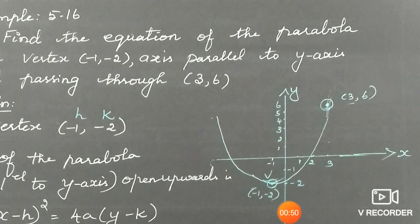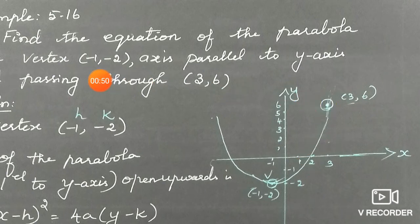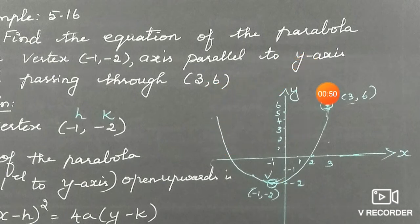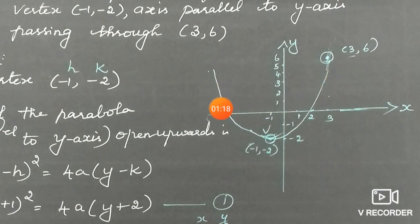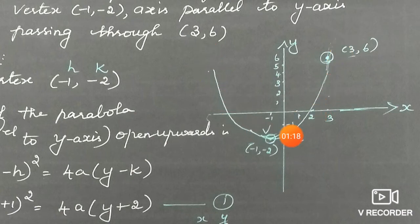Plot the point (3, 6) on the graph. The vertex is at (-1, -2), which lies in the third quadrant. Since the point (3, 6) is above the vertex, the parabola must pass through it going upward. Therefore, the parabola is open upwards. Since vertex is not at the origin, we use the shifted form of the equation.